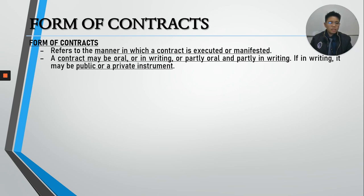Once the private instrument is notarized, it will become a public instrument. Why do we notarize private instruments? Some agreements are required to be notarized because it is required for validity. Also, only public documents are registrable in the registry of property, and only public documents are fully acceptable in court with strong evidentiary value. Private instruments have less evidentiary value.